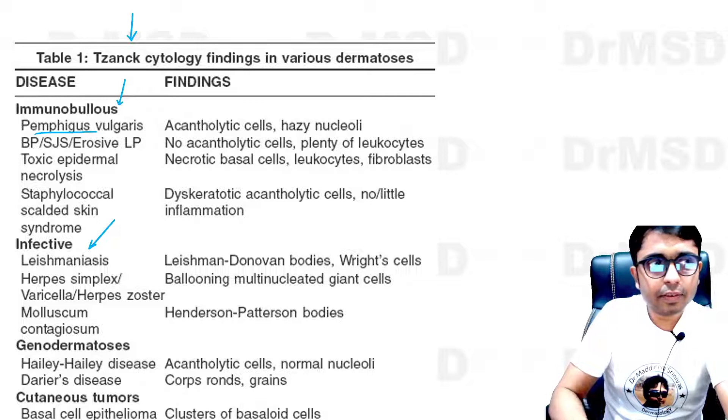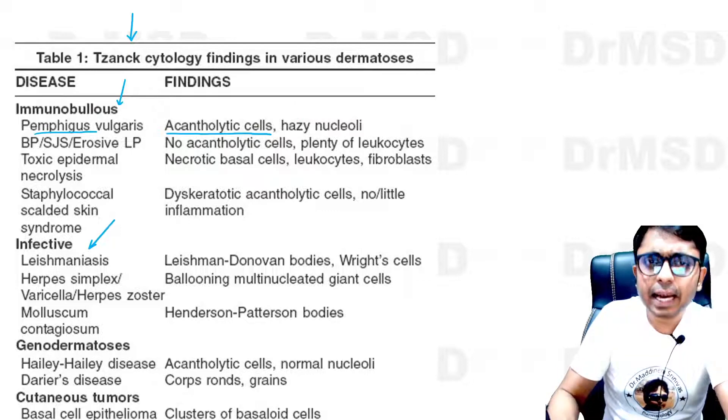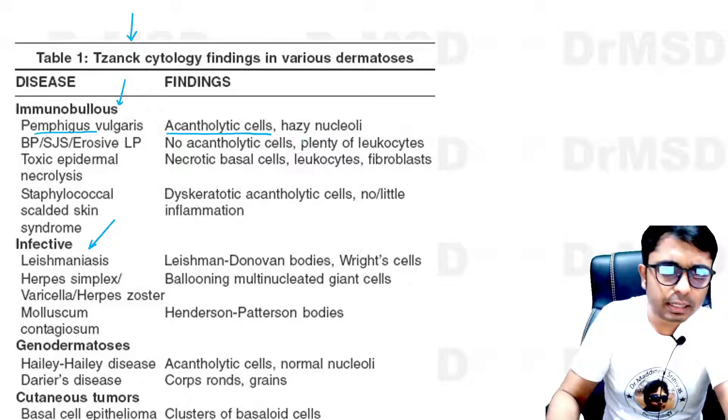In pemphigus vulgaris, you can notice acantholytic cells, which are basically keratinocytes that have lost their intercellular connections because of the damaged desmosomes.